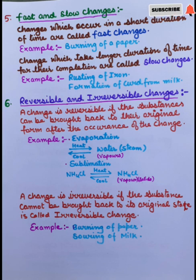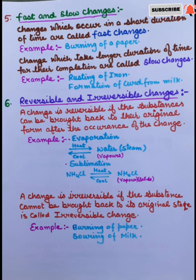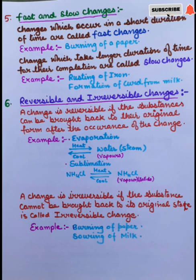Sixth: reversible and irreversible changes. A change is reversible if the substances can be brought back to their original form after the occurrence of the change. For example, when the sun shines, water evaporates from a pond and changes into vapour. Similarly, in sublimation, if you heat ammonium chloride you get its vapours, and if you cool the vapours you get ammonium chloride back. A change is irreversible if the substance cannot be brought back to its original state — for example, burning or souring of milk.